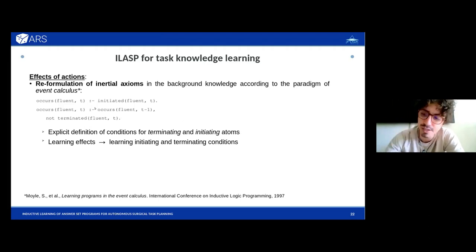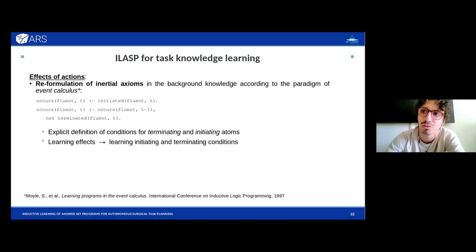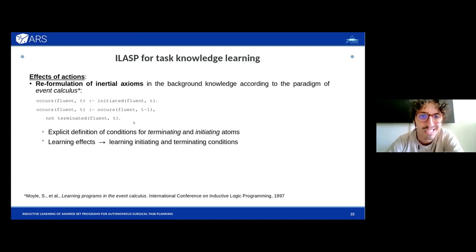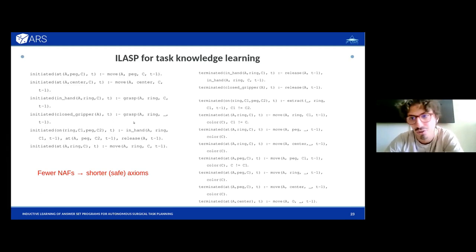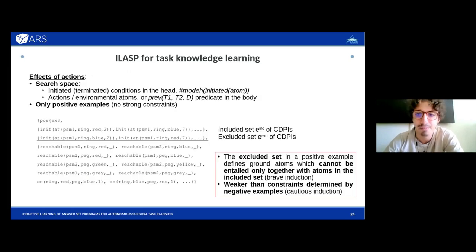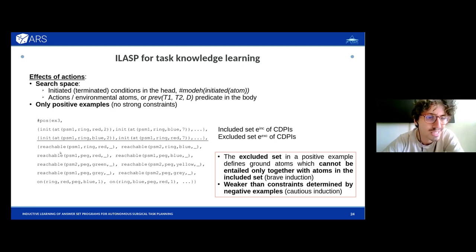We also had to reformulate the standard conventional ASP formulation of effects of actions in order to reduce the number of negation-as-failure occurrences inside the body of rules, which usually lead to longer rules to be learned and a more difficult search space. We decided to use the formalism of event calculus to explicitly learn and specify the initiating and terminating conditions for each environmental fluent. In this way, while the number of rules increases, there is no negation-as-failure in the body of rules. Since we are not interested in learning effect constraints, we defined only positive examples with the full task history as context, and specified some set of excluded grounded atoms in the ILASP framework to ensure learning only relevant causal laws.